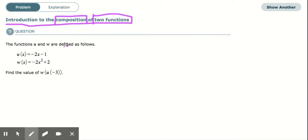The functions u and w are defined as follows: u(x) = -2x - 1, and w(x) = -2x² + 2. We're going to find the value of w composed with u of negative 3.